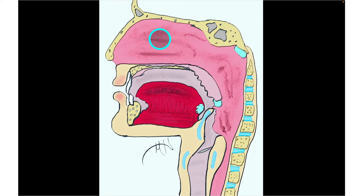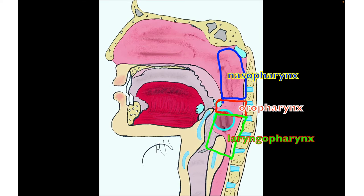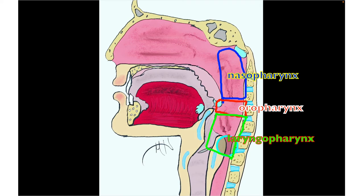Air can be taken in via the nasal cavity or the oral cavity. From roughly this region down is known as the pharynx — the nasopharynx, the oropharynx, and the laryngopharynx. The nasopharynx proceeds from the posterior aspect of the nasal cavity down to the soft palate. The oropharynx is the opening between the soft palate and the epiglottis. The laryngopharynx proceeds from the plane of the epiglottis down to the opening of the esophagus.